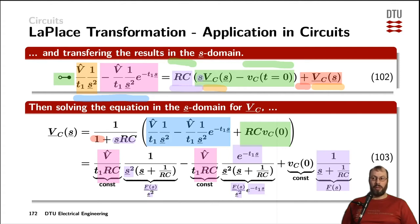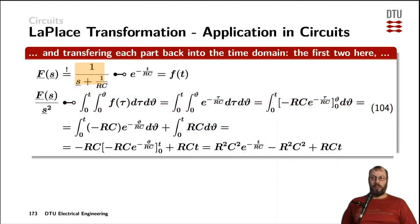Due to the linearity principle of the Laplace transformation, we can transfer the first, second, and third terms back into the time domain individually. F(s) is the most simple one, and then we have modifications of the original. Transferring the first term back, F(s) in the frequency domain is simply looked up in the Laplace transformation properties table. We can define our time domain signal f(t), which is an exponential function with the characteristic time constant of the circuit R multiplied by C in the argument of the exponential function.